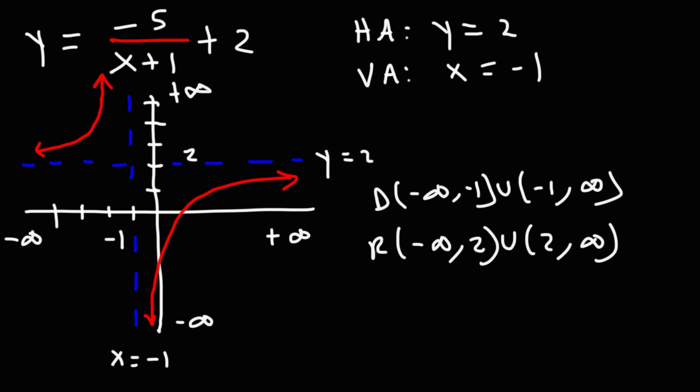And so that's basically it for this video. Now you know how to find the domain and range of a reciprocal function. So just to recap, when writing the domain in interval notation, you want to remove the vertical asymptote, because it's an x value, or it's related to an x value.